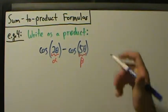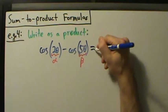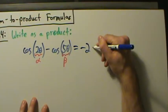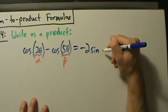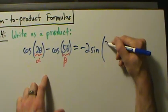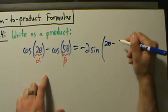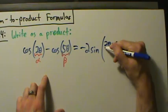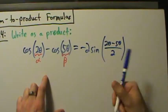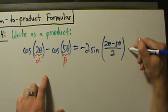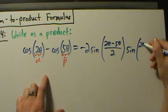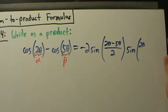Now we're just going to plug into the formula and simplify. So this is negative two times the sine of (alpha minus beta) over two — that's (two theta minus five theta) all over two — times the sine of (alpha plus beta) over two, which is (two theta plus five theta) over two.